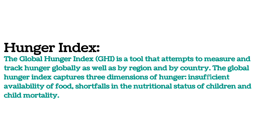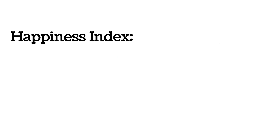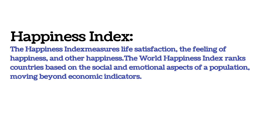Global Hunger Index एक ऐसा tool है जो globally, regionally और देश के अनुसार भूख को नापने और track करने का कोशिश करता है. यह भूख के तीन dimensions को दर्शाता है: भोजन की बहुत थोड़ी availability, बच्चों की nutrition स्थिति में कमी, और child mortality. Happiness Index जीवन संतुष्टि, खुशी की भावना और अन्य खुशी को नापता है. World Happiness Index, economic indicators से आगे बढ़कर population की social और emotional aspects के आधार पर देशों को rank करता है.